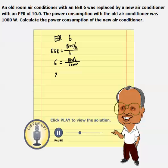So we can calculate that unknown x by multiplying 1,000 by 6, and we get 6,000 BTUs per hour.